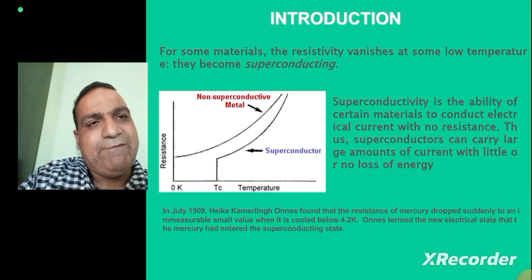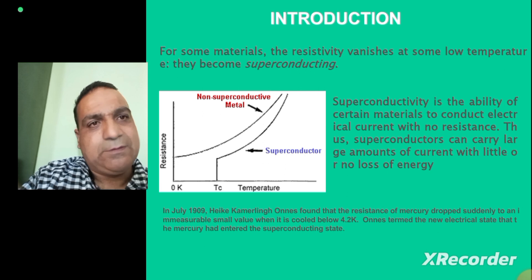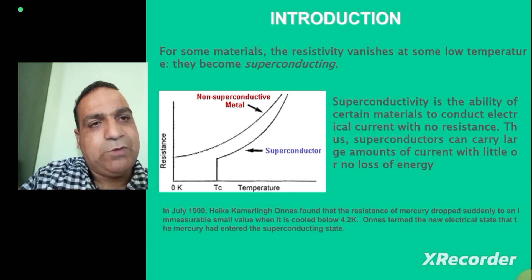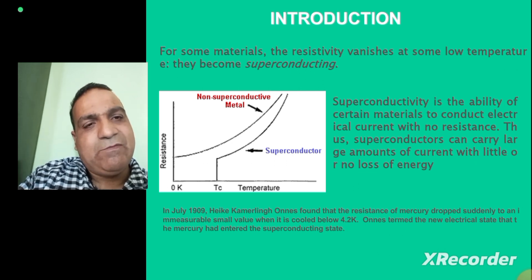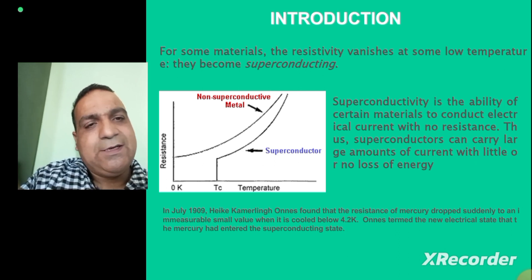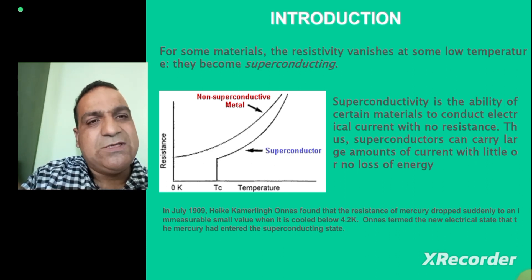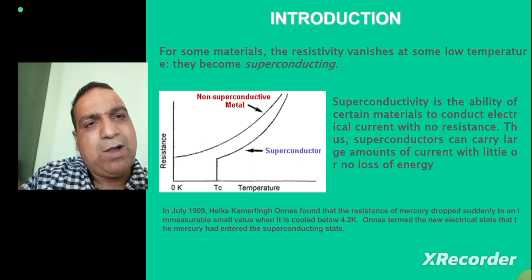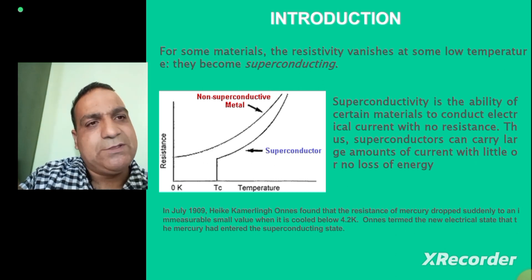This was the advent when it was declared that there are materials — at that point of time it was mercury — showing a very strong transition when taken close to 4.2 Kelvin. It was observed that mercury does not offer any resistance to the flow of current, meaning this DC current could stay in the system, in the conducting wire, for a long, long time. Certainly we can expect a lot of technological applications from these materials.